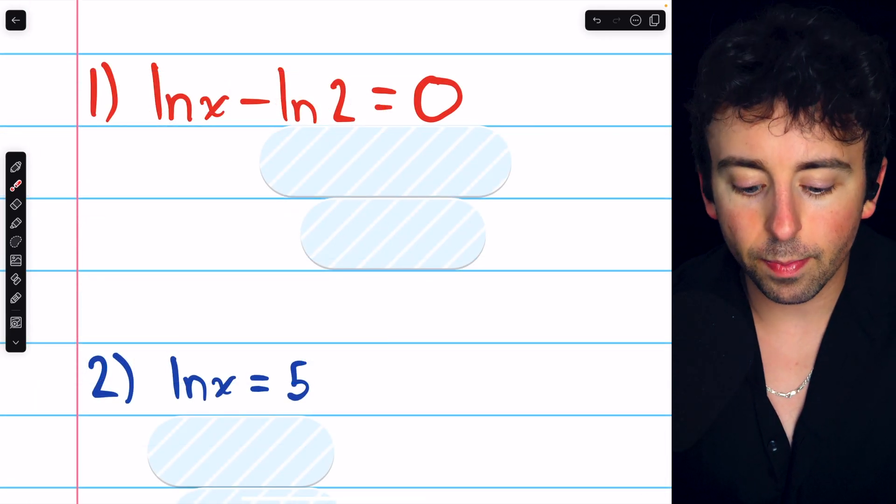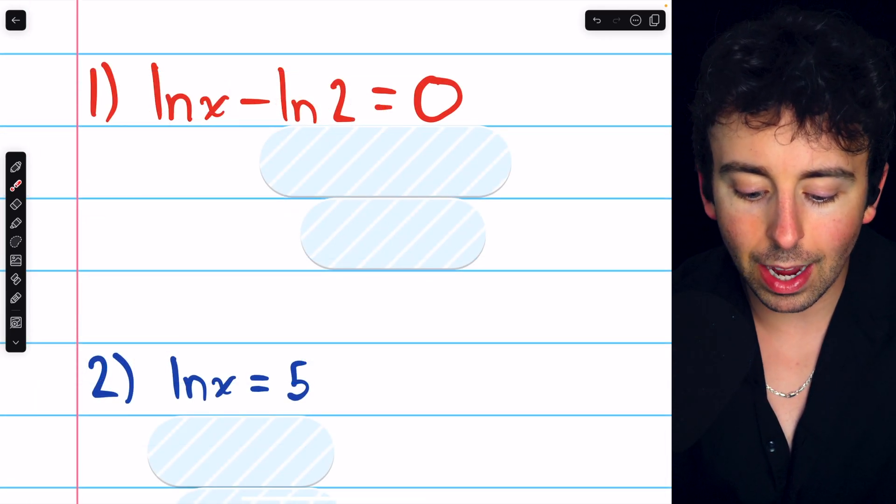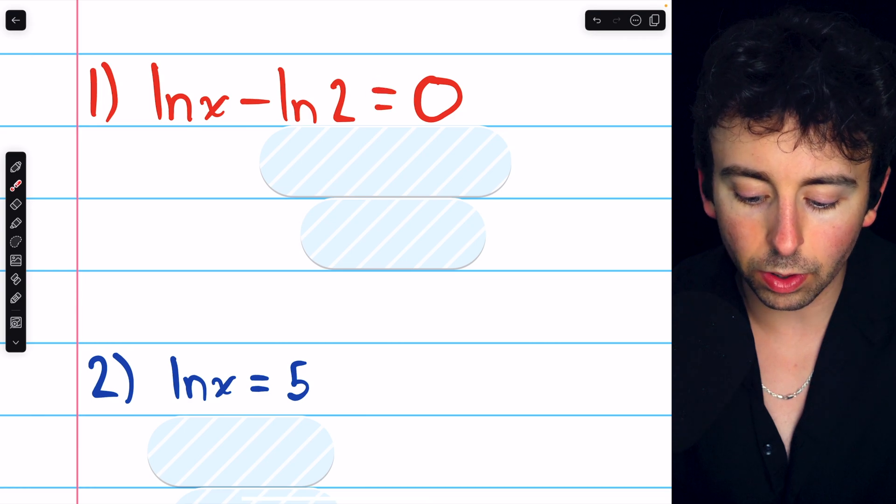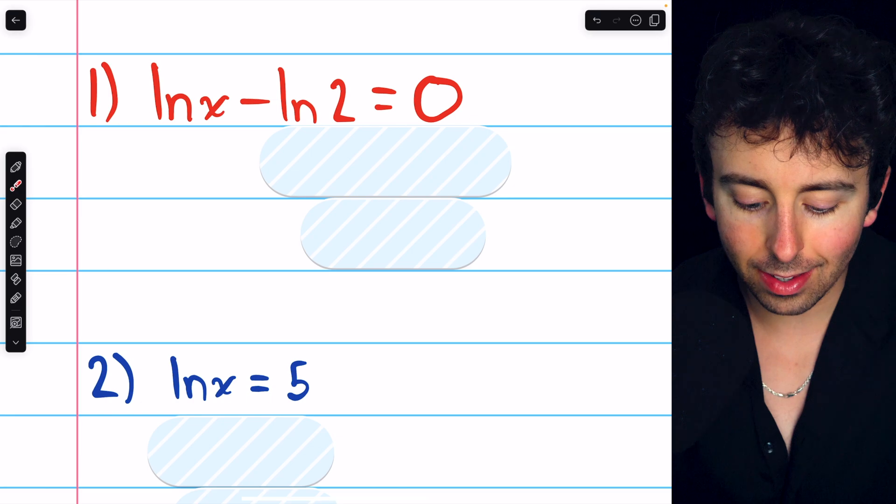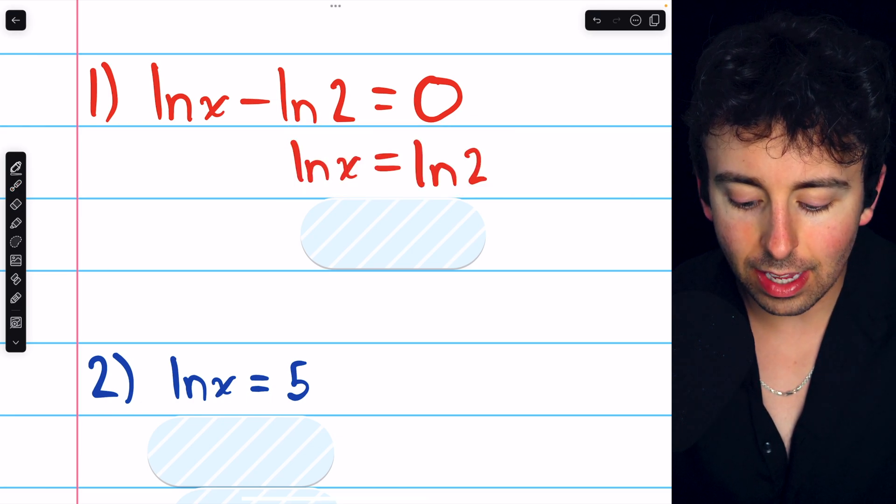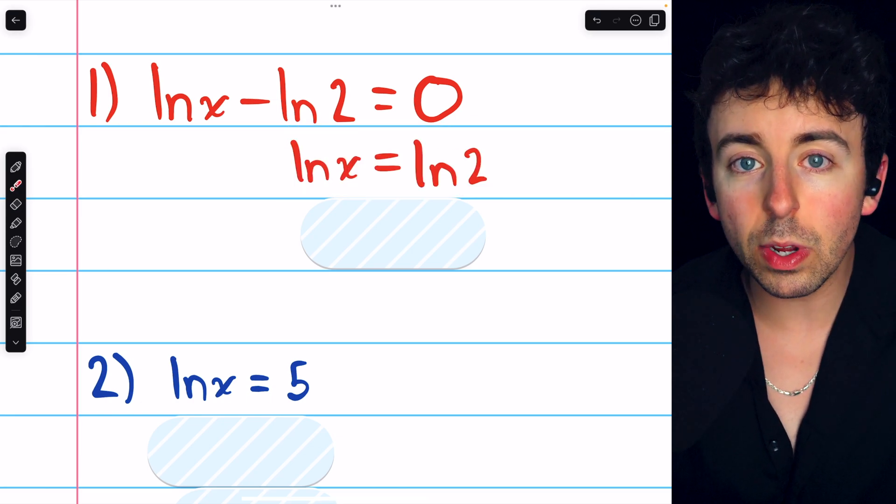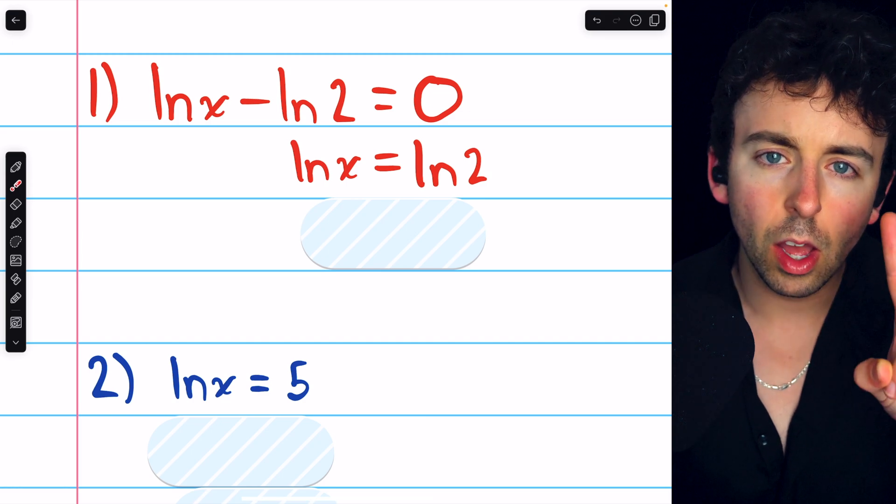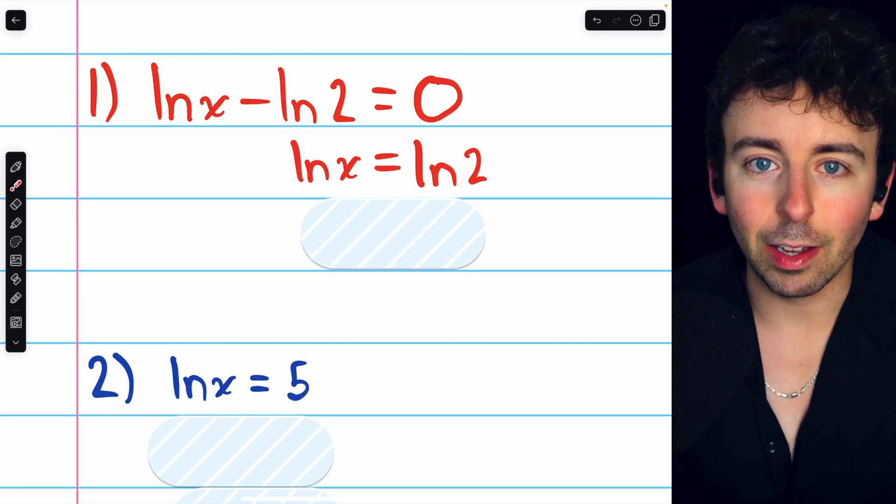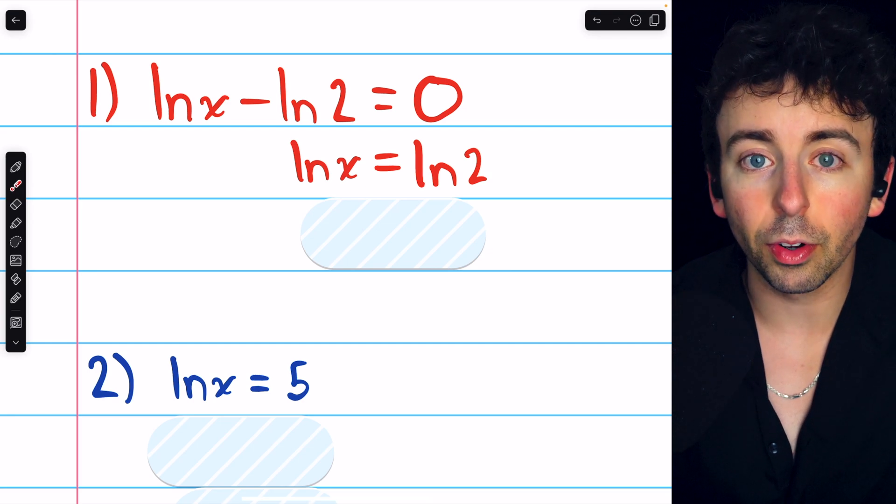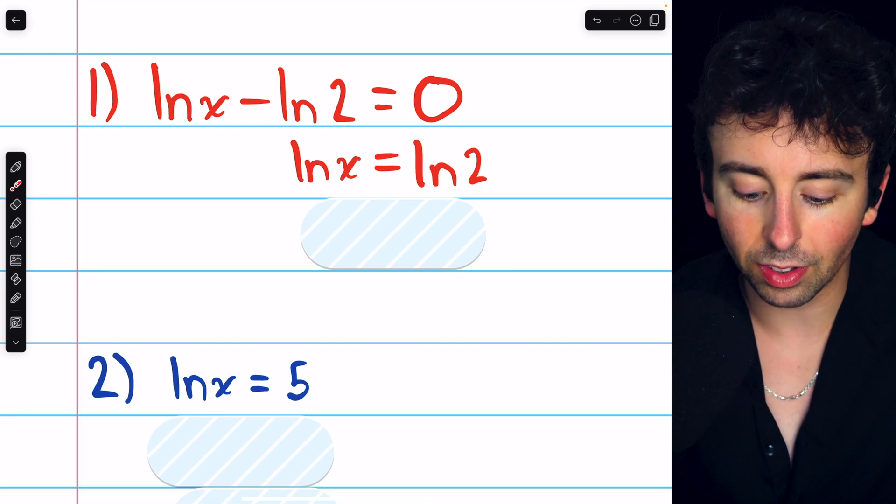Beginning with number one, we have lnx minus ln2 equals zero. If we add the natural log of two to both sides, then we have lnx equals ln2. We can use what's sometimes called the one-to-one property of the natural log function, meaning if the logs of two things are equal,